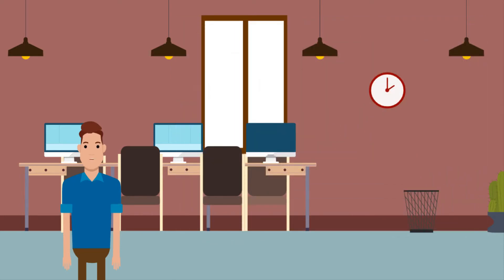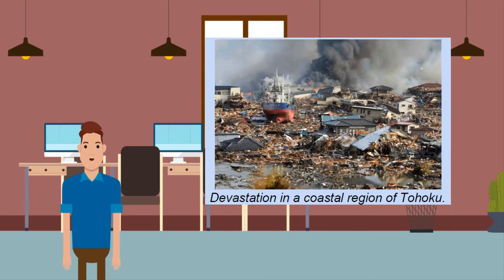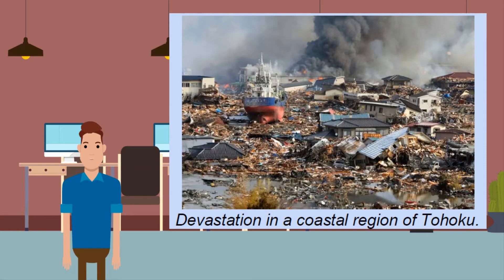The secondary impacts: a huge tsunami with waves up to 40 metres (131 feet) high in some places devastated the eastern coast of Japan following the earthquake. 15,900 people died, 2,600 went missing, and 6,150 were left injured — mainly due to the tsunami.